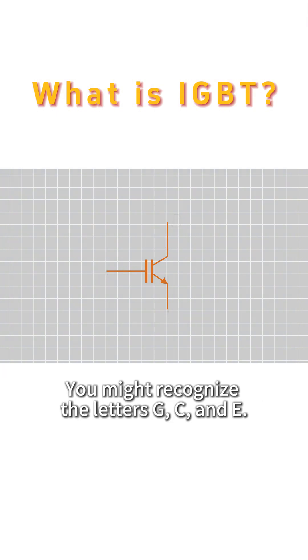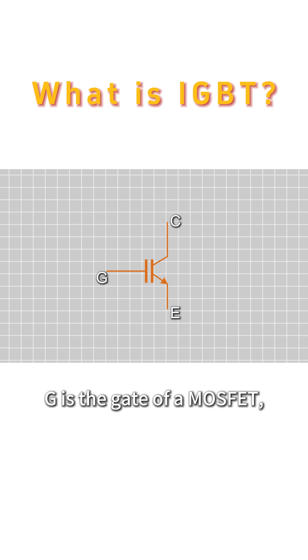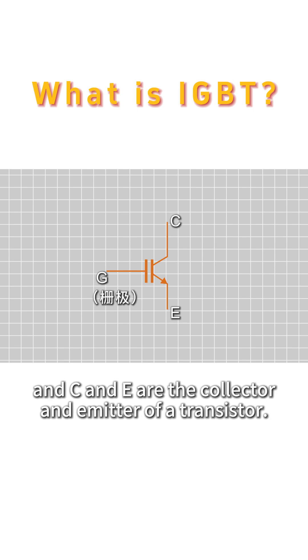You might recognize the letters G, C, and E. G is the gate of a MOSFET, and C and E are the collector and emitter of a transistor.